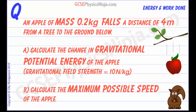First thing we need to do is calculate the change in gravitational potential energy of the apple, and we're given that the gravitational field strength, usually given the symbol little g, is 10 newtons of force for every kilogram.